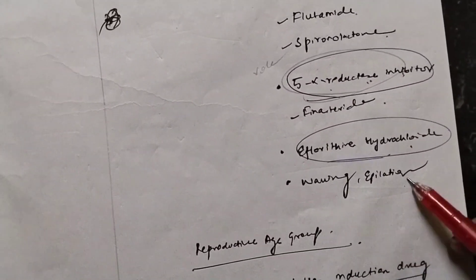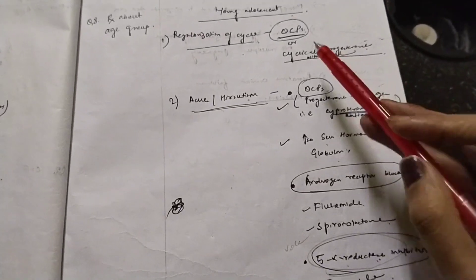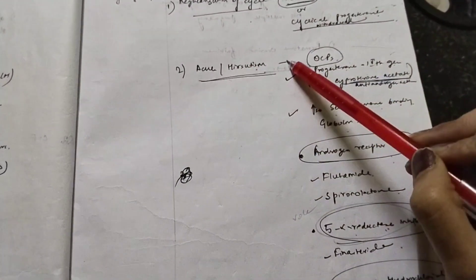For removing the facial hair, you can also do waxing and epilation. This is the treatment of PCOD in case of young adults, basically regularization of the cycle and manifesting the secondary sexual characters.